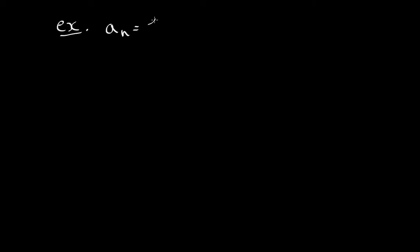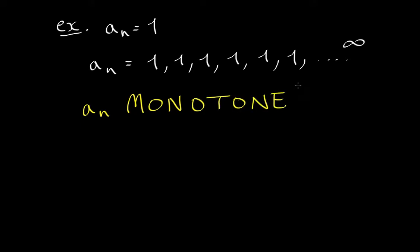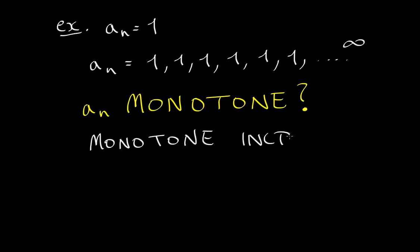Let's consider a sub n equal to one — a constant sequence: one, one, one, one, one, and so on, infinitely many ones. Is this monotone? The answer is that it is both monotone increasing and monotone decreasing.